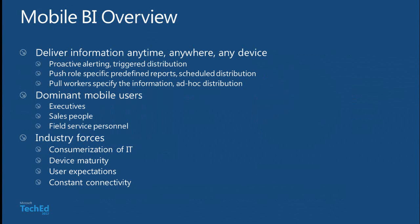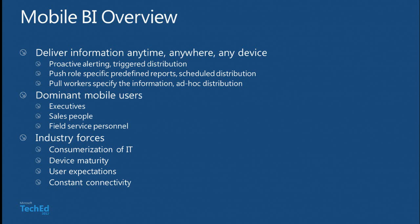Mobile BI overview: basically, what is Mobile BI? It's the ability to deliver information anytime, anywhere, any device. What types of information? We're talking about proactive alerting, triggered distribution. Use cases I see a lot include inventory shortages, demand sensing, staffing, being more proactive, even putting predictive analytics to be more forward-thinking. Pushing out reports — Reporting Services has scheduled distribution of reports and you can push them out to PDFs for various scenarios and phones that aren't sophisticated.